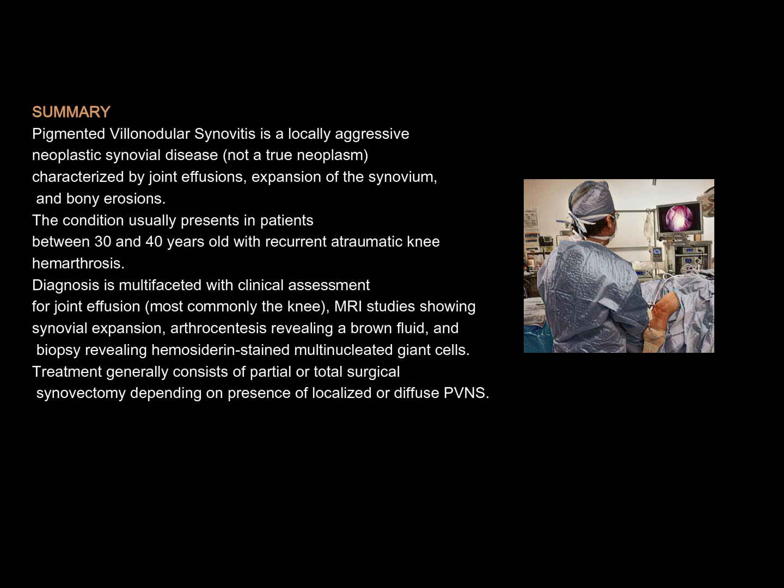Summary: Pigmented Villonodular Synovitis (PVNS) is a locally aggressive neoplastic synovial disease — not a true neoplasm — characterized by joint effusions, expansion of the synovium, and bony erosions. The condition usually presents in patients between 30 and 40 years old with recurrent atraumatic knee haemarthrosis.